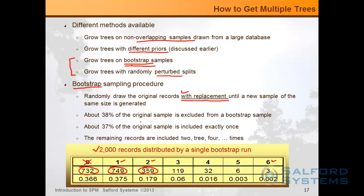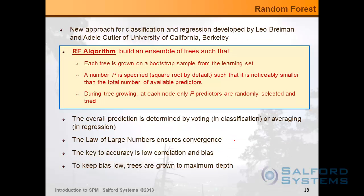The end result is a new dataset where about 38% of the original sample is excluded, about 37% is included exactly once, and the remaining records are included 2, 3, 4 times or more. The beauty of bootstrap samples is that the combinatorics are such that even with a small sample of 200 observations, you have an enormous number of different bootstrap samples you can construct. And once you have a bootstrap sample, you can induce multiple trees.